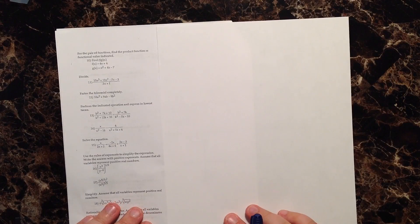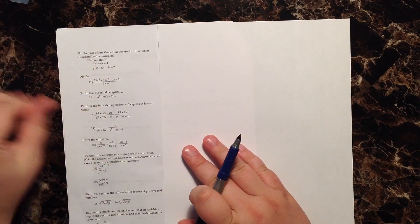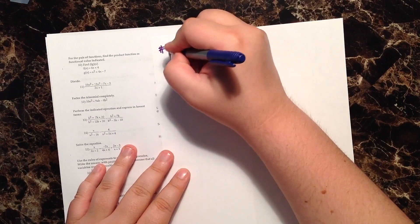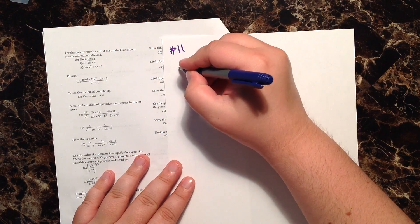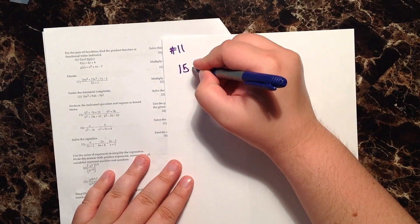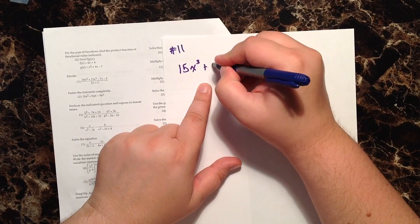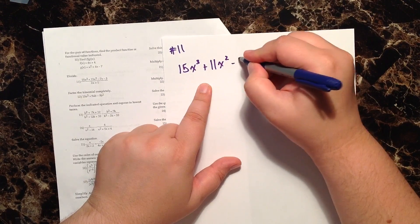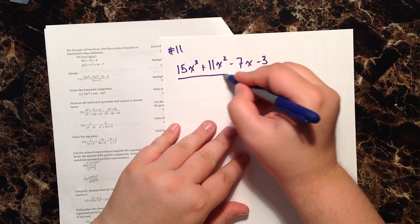All right, so question number 11, the directions are simple enough, they just say divide. And I see that I have 15x to the third plus 11x squared minus 7x minus 3 over 3x plus 1.